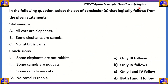This is a question based on syllogism. In the following question, select the set of conclusions that logically follow from the given statements. All cats are elephants. Some elephants are camels. No rabbit is a camel are the statements. The conclusions are: some elephants are not rabbits; some camels are not cats; some rabbits are cats; no camel is a rabbit.